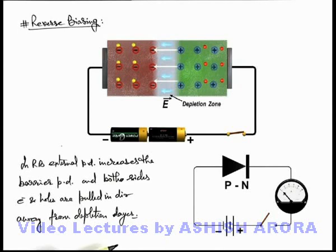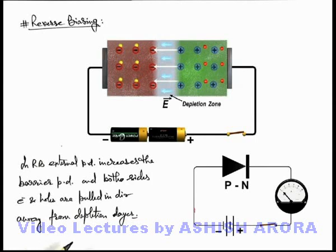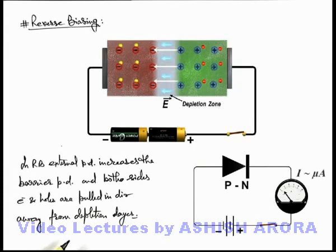Here we can see in this symbolic circuit diagram that if a p-n junction diode is reverse biased — that is, its p side is connected to the negative terminal of the battery and the n side is connected to the positive terminal — on closing the switch, a negligible current flows through the circuit. This current is almost in the range of microamperes, which can be neglected.